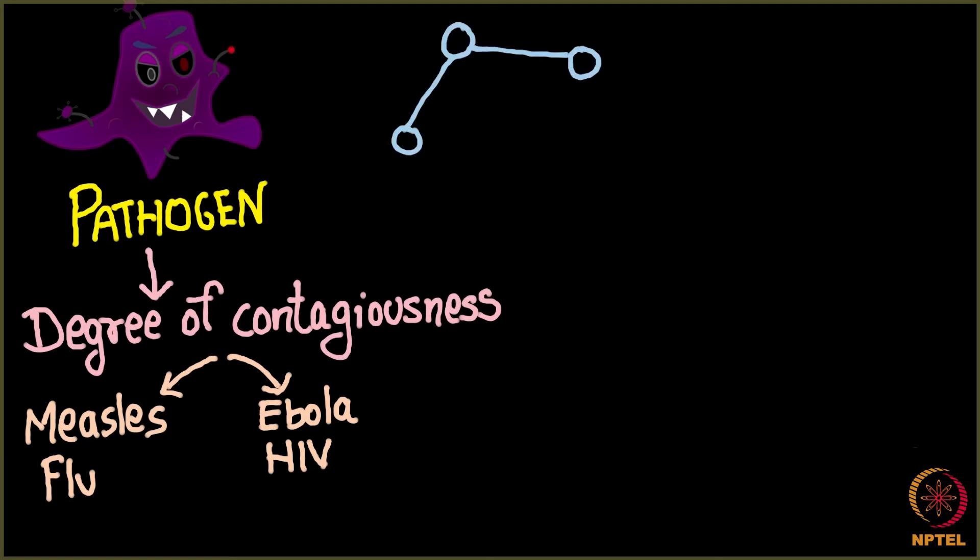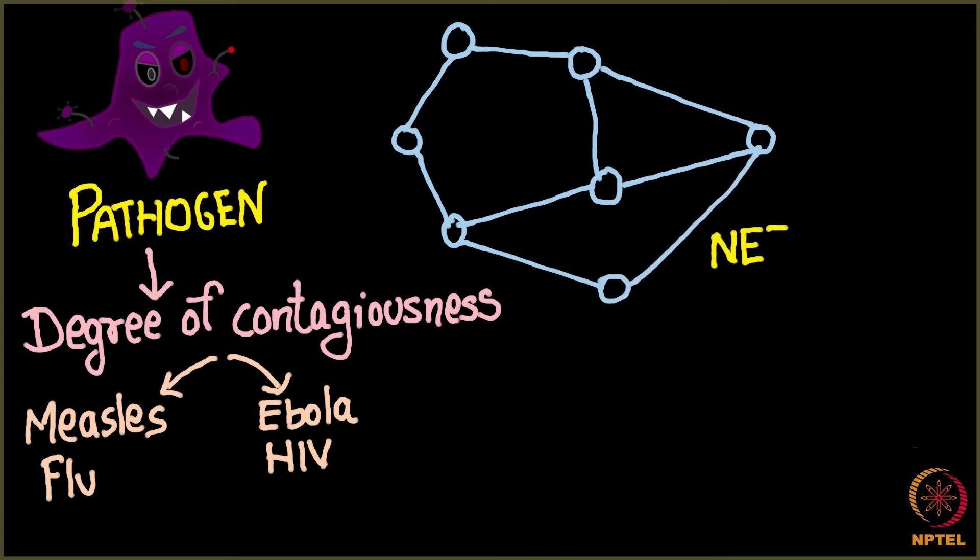And the second, which is the obvious for a network scientist of course, is the network. Yes, we need the network on which this pathogen is spreading. Does the network really matter? Yes it matters.